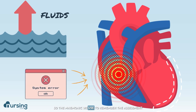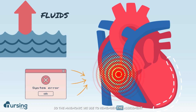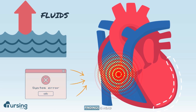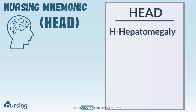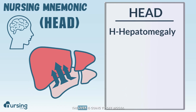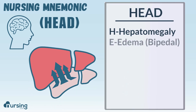The mnemonic we use to remember the assessment findings is HEAD — just H-E-A-D. The H stands for hepatomegaly. The liver is going to get bigger, and we're going to be able to feel it.